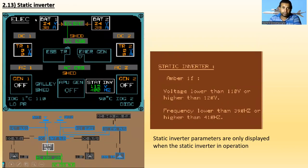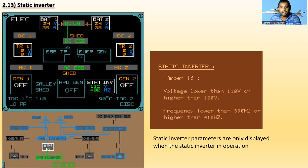The last one is the static inverter. The static inverter is used when the emergency generator is starting up — it takes some time to connect, so until then the static inverter powers the aircraft. The static inverter becomes amber if voltage is lower than 110 volts or higher than 120 volts, or if frequency is lower than 390 hertz or higher than 410 hertz. Static inverter parameters are only displayed when the static inverter is in operation.